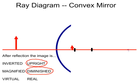And then finally, is it virtual or real? Well, remember we have those dotted lines that were extended behind the mirror itself, so that makes it a virtual image. So our convex mirror gives us an upright, diminished, virtual image. Thank you.